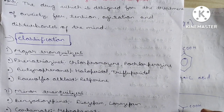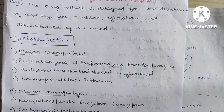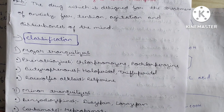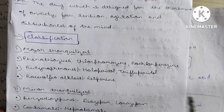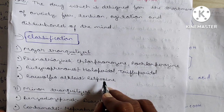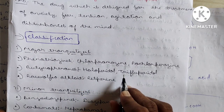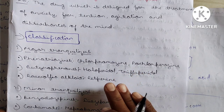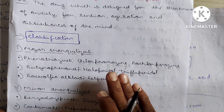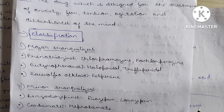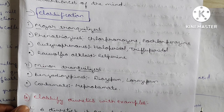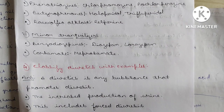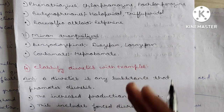Major tranquilizers classification: Phenothiazines — chlorpromazine and prochlorperazine. Butyrophenones — haloperidol and trifluoperidol. Rauwolfia alkaloids — reserpine. Minor tranquilizers: Benzodiazepines — diazepam and lorazepam. Carbamates — meprobamate.